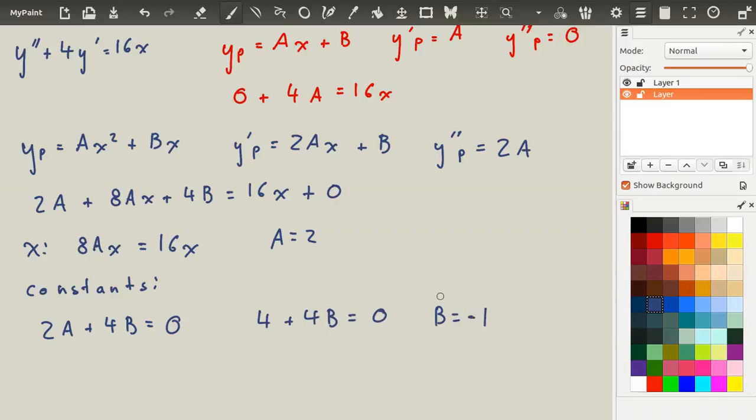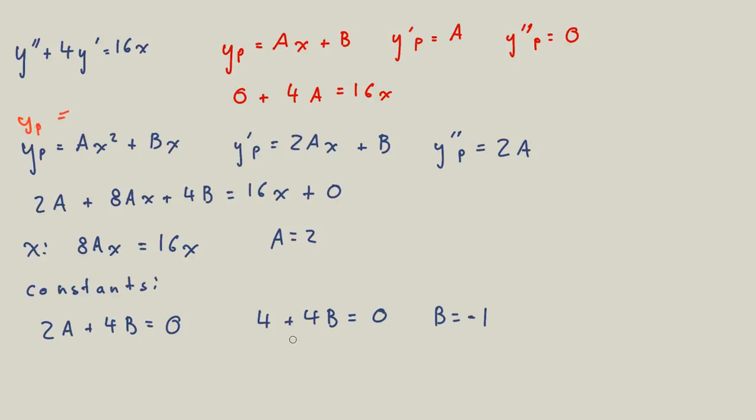That means we can go back and write that our yp is equal to ax squared. So a is 2. So 2x squared. And b is minus 1. So that becomes minus x.